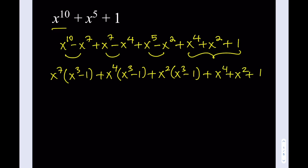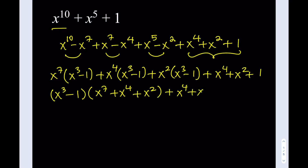We can write the expression as x to the 7th times (x cubed minus 1), plus x to the 4th times (x cubed minus 1), plus x squared times (x cubed minus 1), plus the group (x to the 4th plus x squared plus 1). Among the first three terms we have a common factor of x cubed minus 1, so we factor that out to get (x cubed minus 1)(x to the 7th plus x to the 4th plus x squared), plus (x to the 4th plus x squared plus 1).